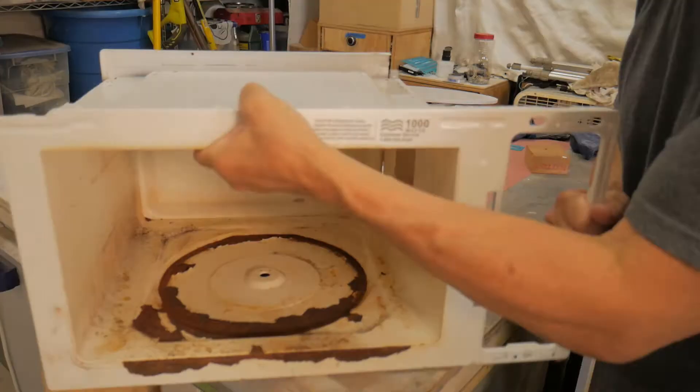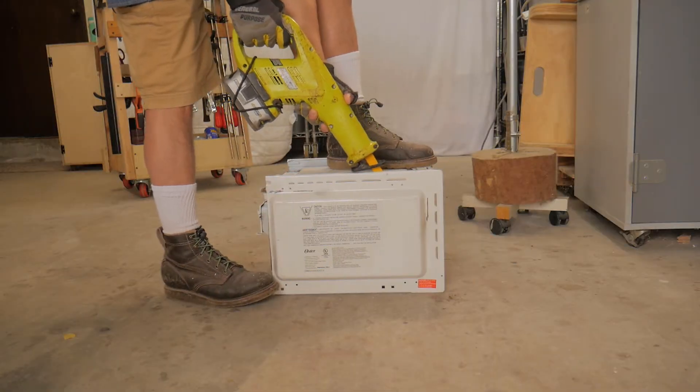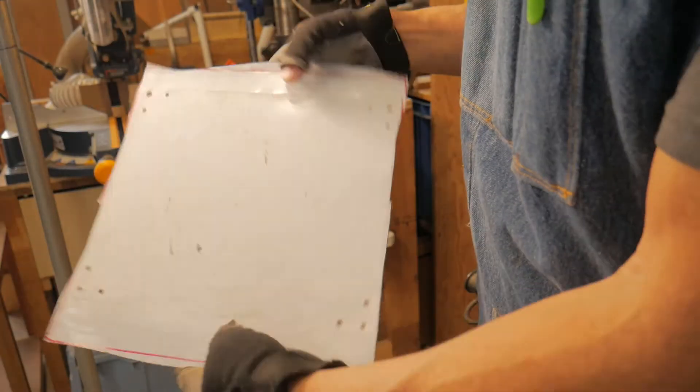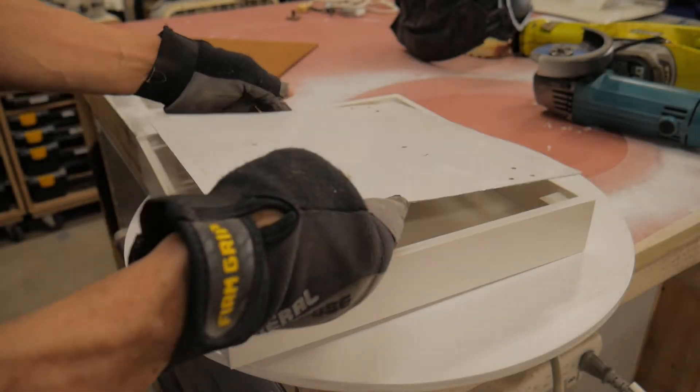So originally I thought I'd use some thin hardboard for the bottom but decided hey I could use the metal out of the microwave. So I cut out the back of the microwave and hammered it as flat as I could, which wasn't very flat.